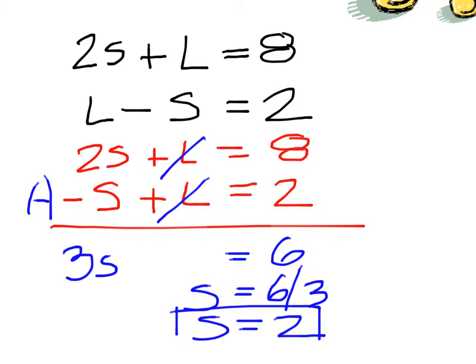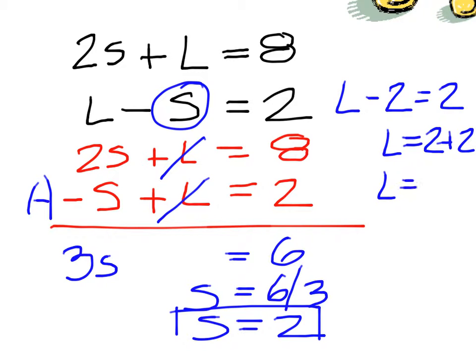Put that 2 back into one of your original equations. You can put it here and do L minus 2 equals 2. So 2 plus 2 would have to give me 4. Large is 4, small is 2.